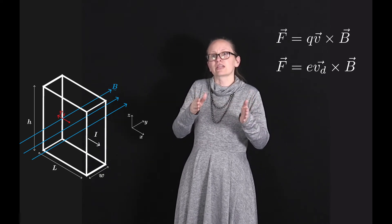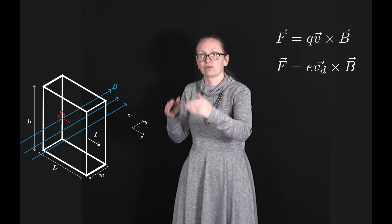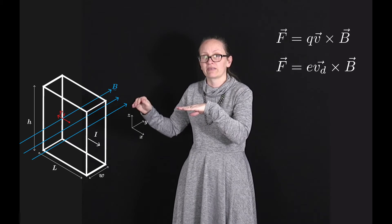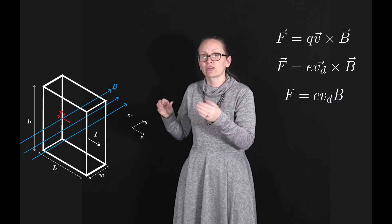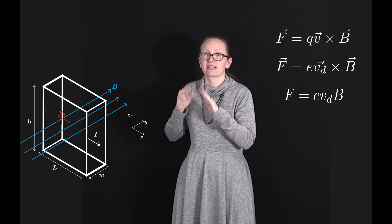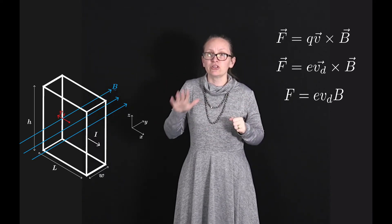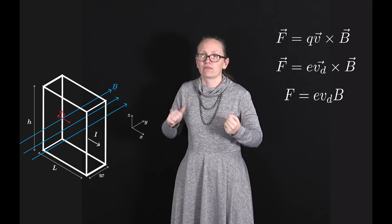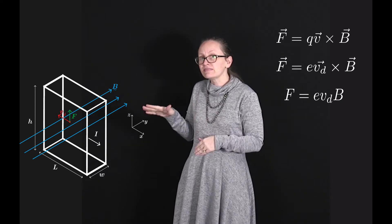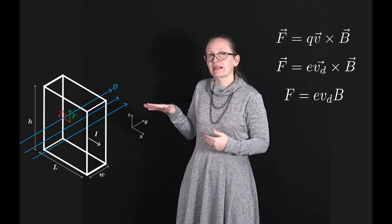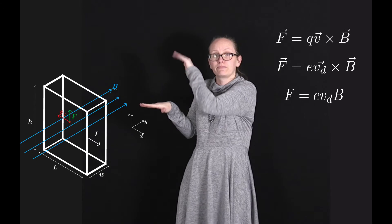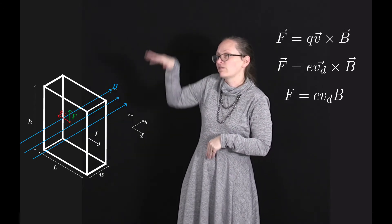The electrons are moving in the opposite direction to the current — in the negative x direction — and the magnetic field is going in the y direction. So the magnitude of the force is eV_dB, because the velocity and magnetic field are perpendicular (sin 90° = 1). Using the right-hand rule for negative particles moving in the negative x direction with B in the y direction, the force on the electrons is upward.